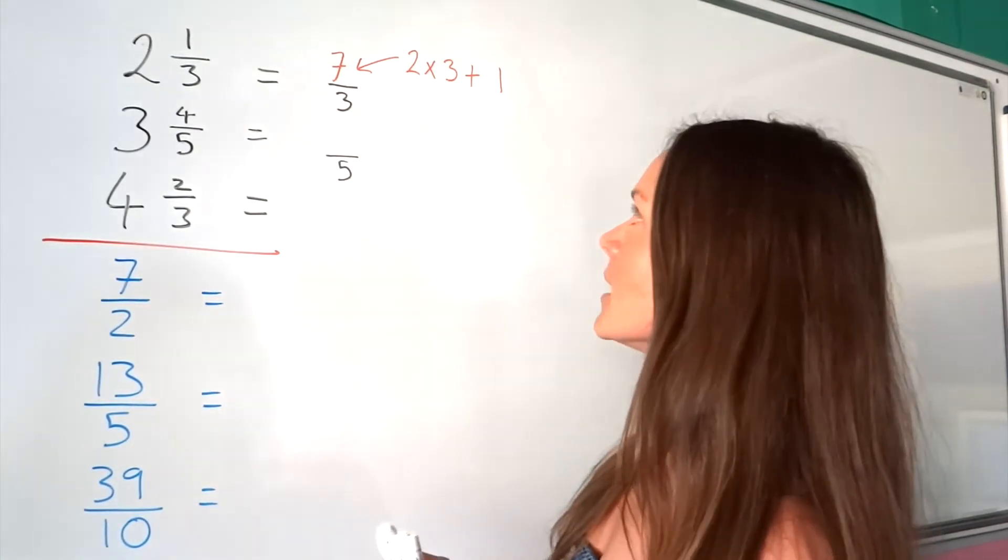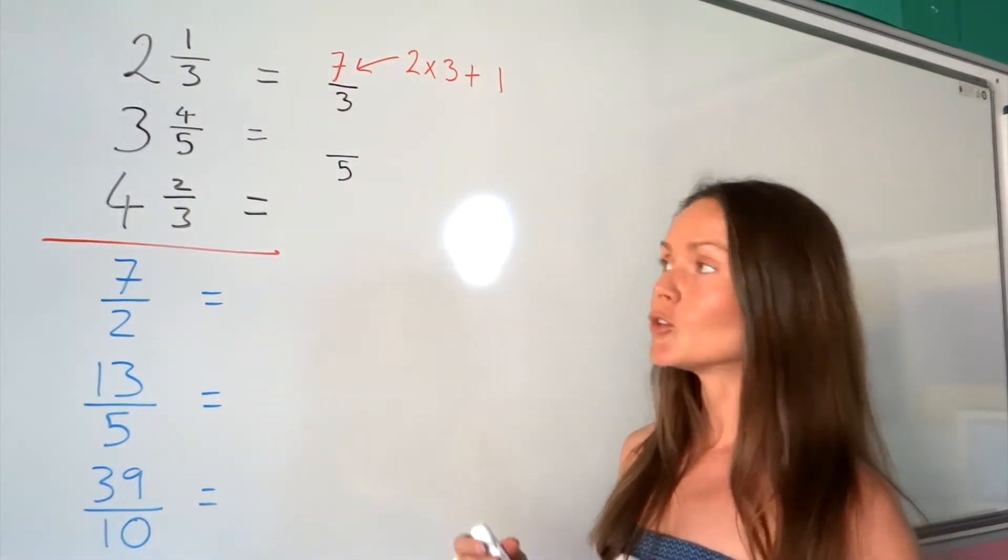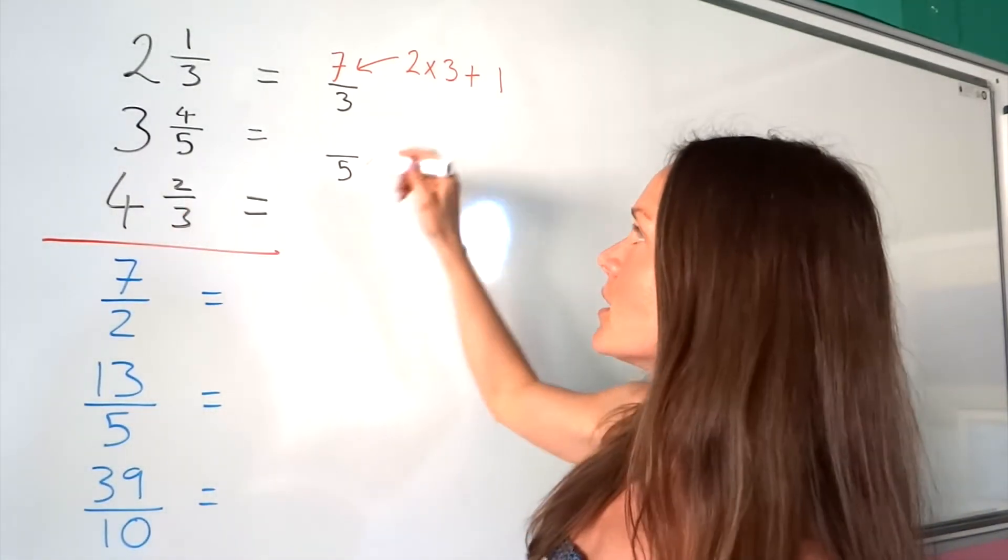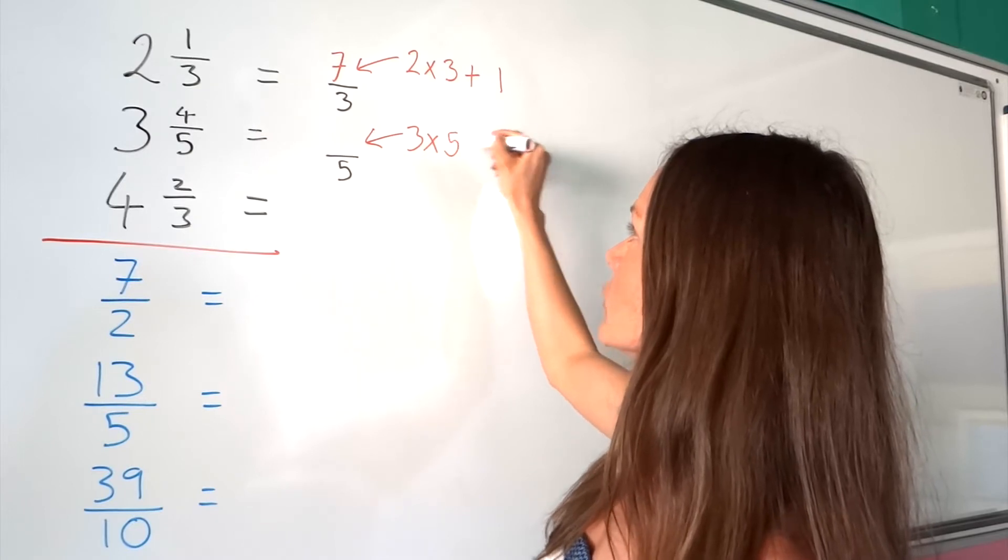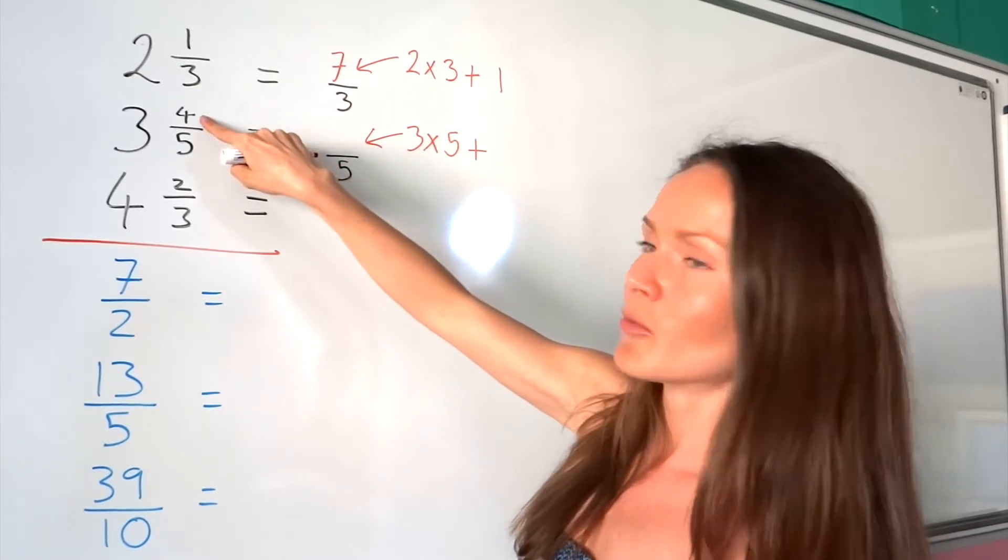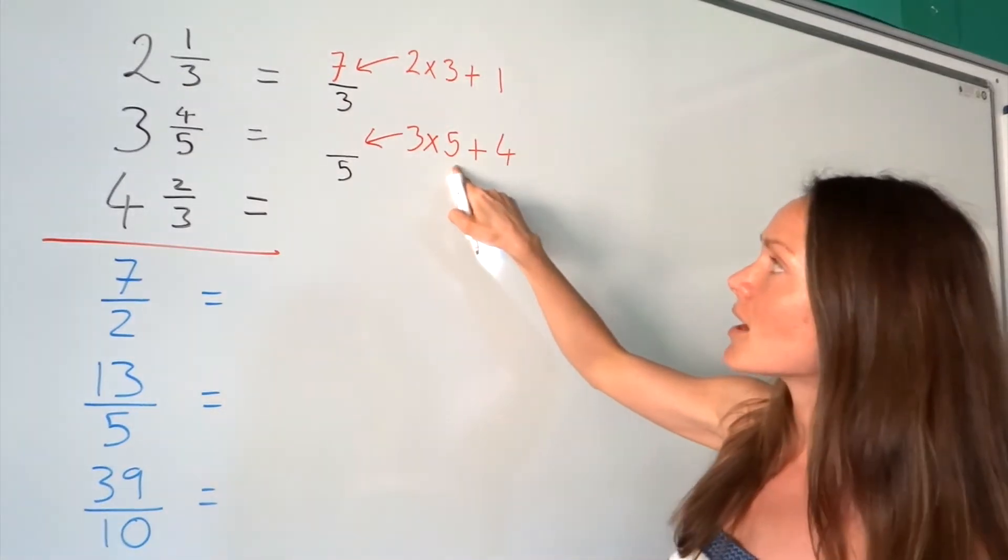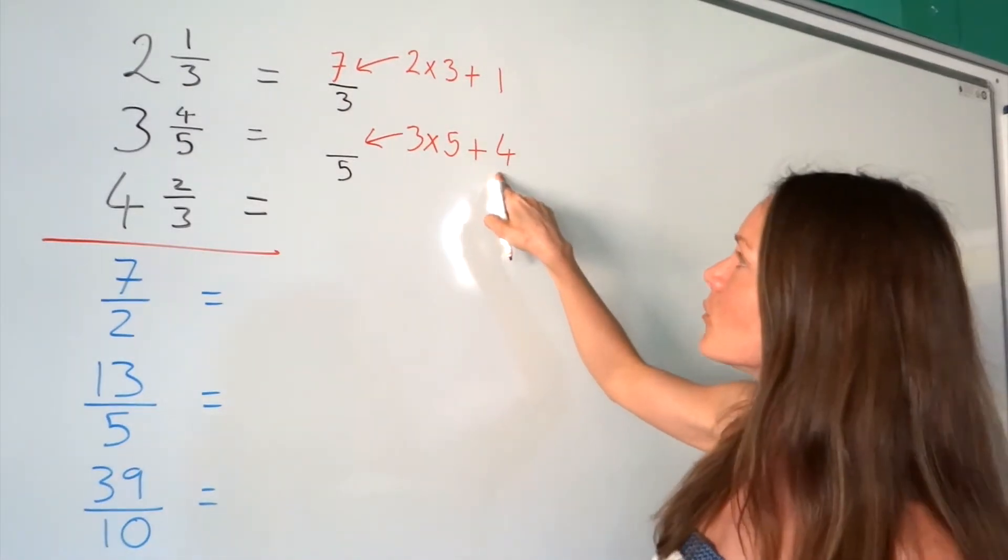For the next one, the denominator stays the same. To find the numerator, you multiply the whole number 3 by the denominator 5, then add the numerator 4. So 3 times 5 is 15, plus 4 gives me 19. So 3 4/5 equals 19/5.